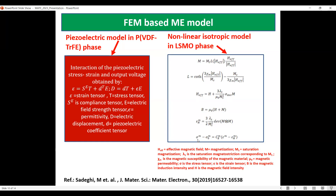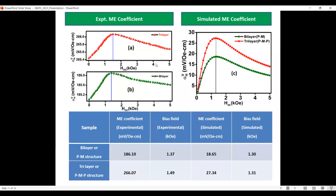The stress-strain equation is given by σ − σ₀ = C(ε − ε_H). These are the equations for the FEM modeling. We have shown the experimental and simulated magneto-electric coupling coefficients.